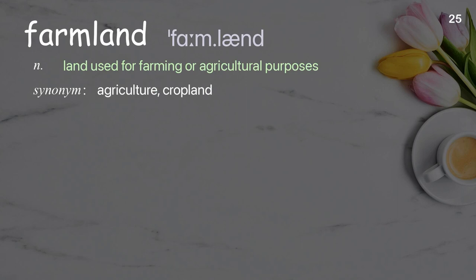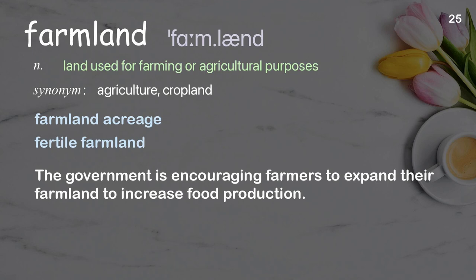Farmland: land used for farming or agricultural purposes. Examples: farmland acreage; fertile farmland. The government is encouraging farmers to expand their farmland to increase food production.